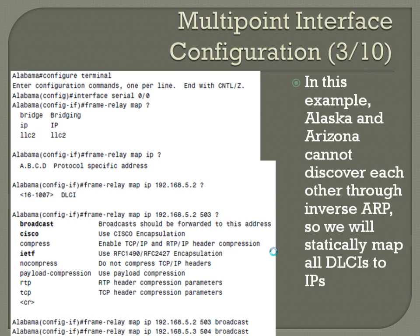From Alabama, config T, interface serial 0/0, frame-relay map IP — put in the IP of the remote side and then your DLCI number. So, frame-relay map IP 192.168.5.2, 503, and you're going to want to set it up as broadcast.